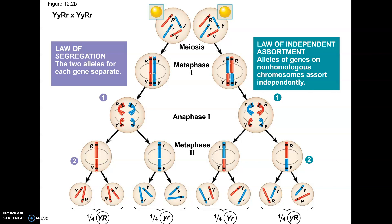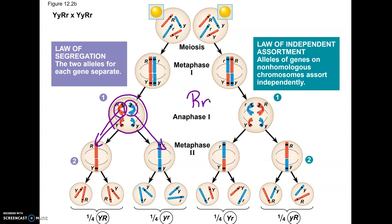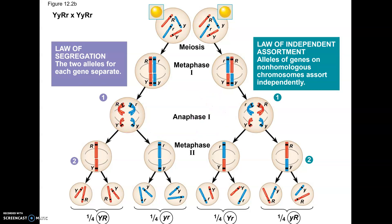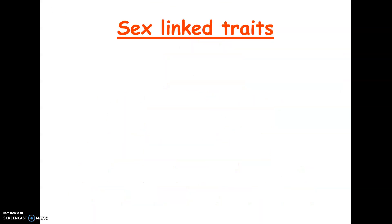Mendel said factors separated — we're saying that's meiosis, and chromosomes are the things that segregate. When we do crosses like big R little r, big Y little y, and get different combinations — that was independent assortment. What's actually lining up randomly and independently is the chromosomes. That's the chromosome theory of inheritance.